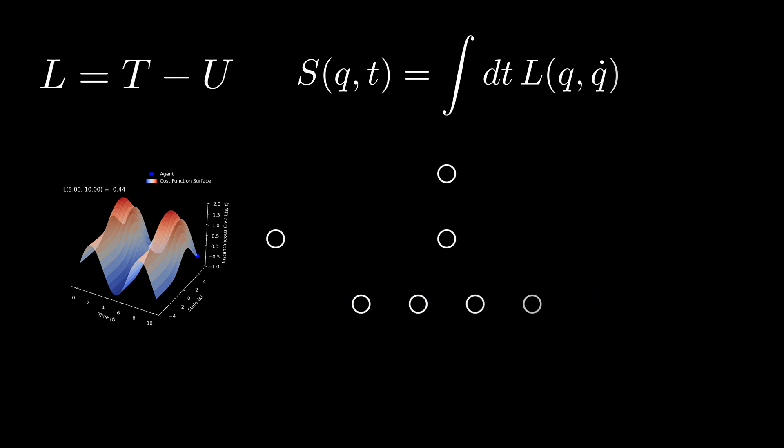In reinforcement learning, this equation takes on a new interpretation. It represents the total cost associated with following a particular path or making a sequence of decisions.